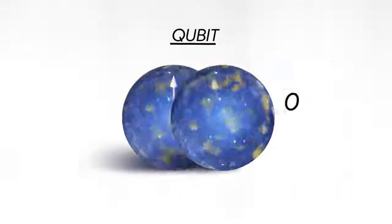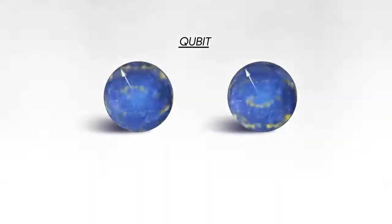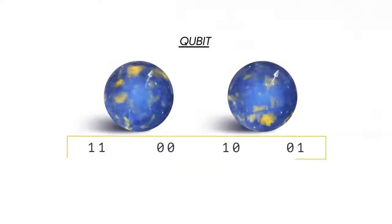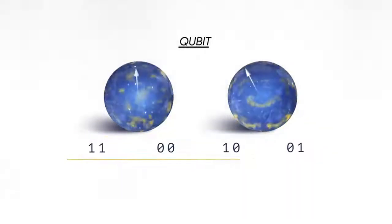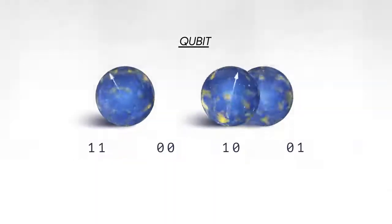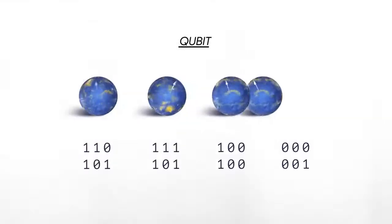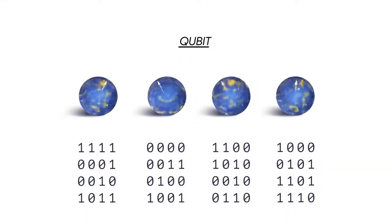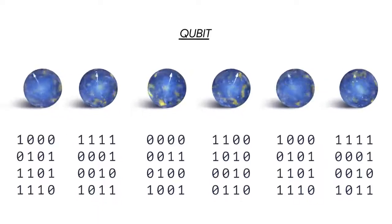If you have two quantum bits then there are four possible states that you can put in superposition. With three qubits it's eight, four qubits it's 16 — it grows exponentially.